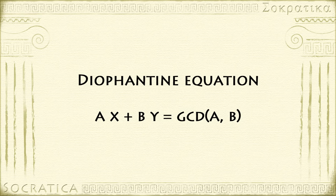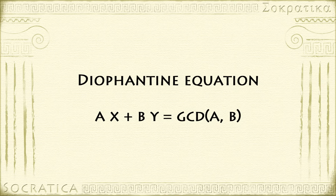We're going to start simply. In an earlier video we saw how to solve Diophantine equations with a single variable. We're now going to take the next step in complexity and look at a Diophantine equation with two unknowns. To keep things as simple as possible, we're only going to look at equations with two variables of degree one. Before we give a general method, we're going to look at a particular case which is an important stepping stone to the general solution.